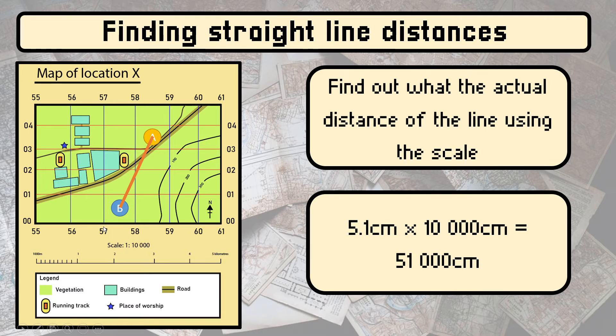This is telling you 1 cm on the map equals how many cm in reality. Remember this number on the right here is always in cm. So 1 cm on the map equals 10,000 cm in reality.